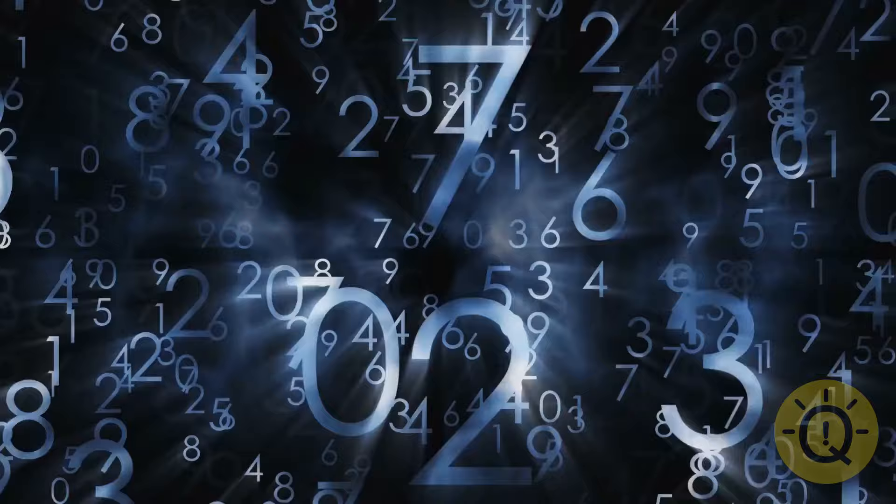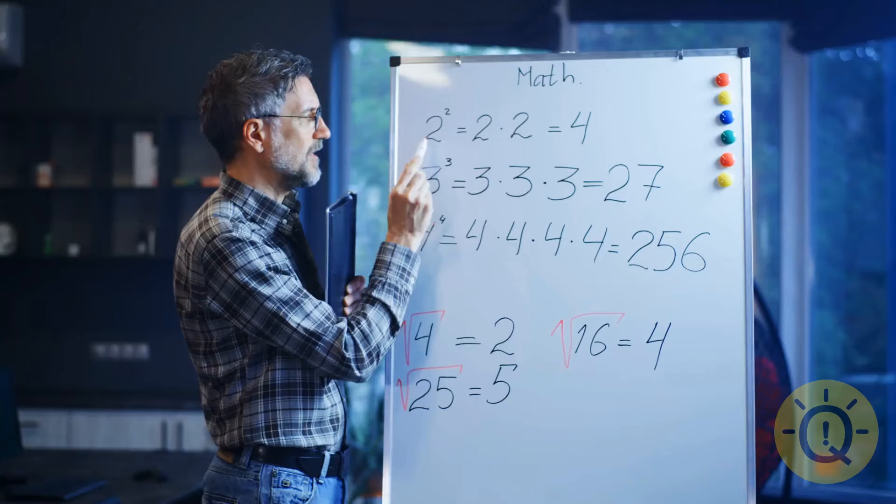No number before 1,000 contains the letter A. True. Now, you can try and spell each number out if you like, but I bet you're just gonna take my word for it.